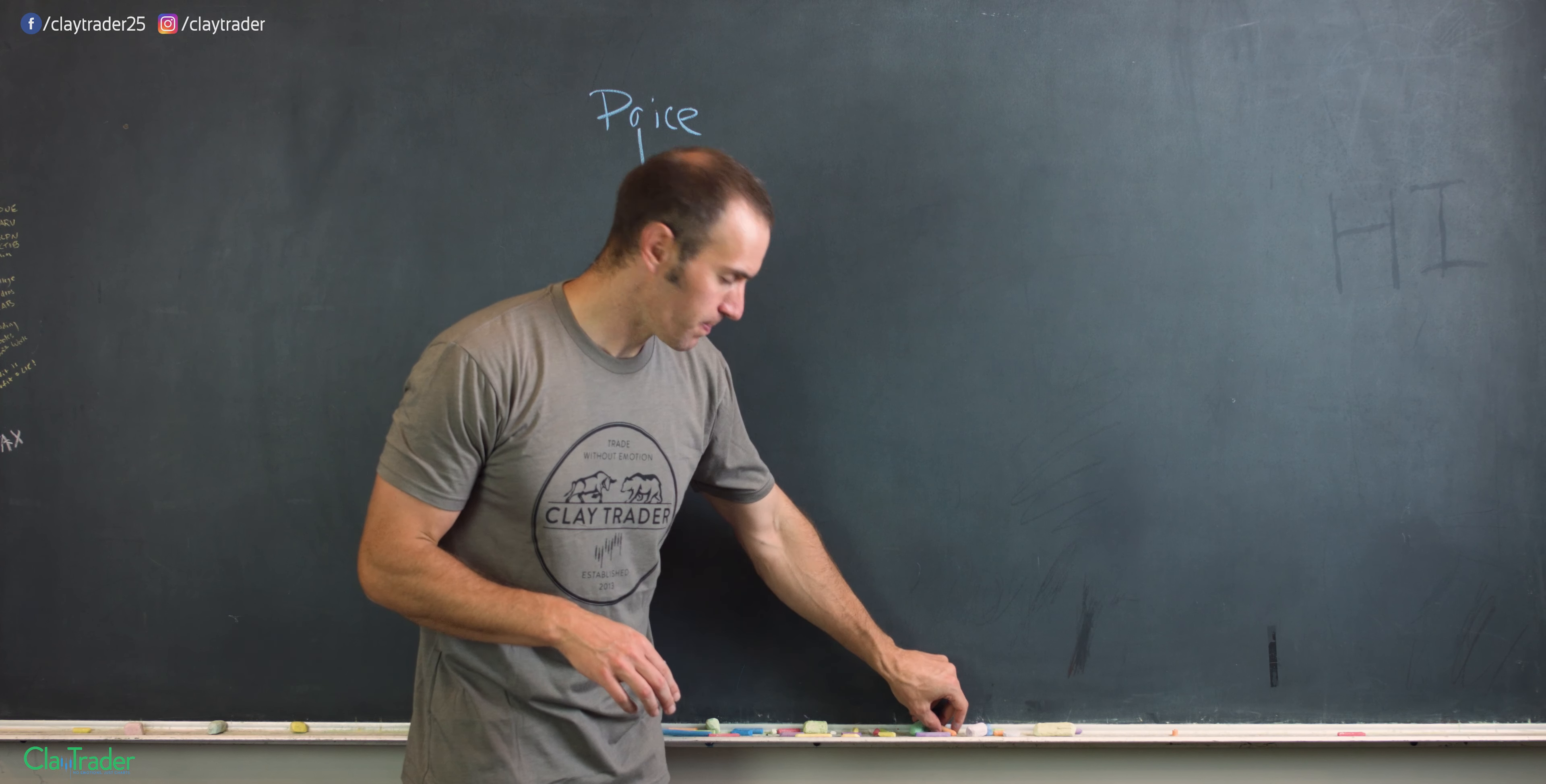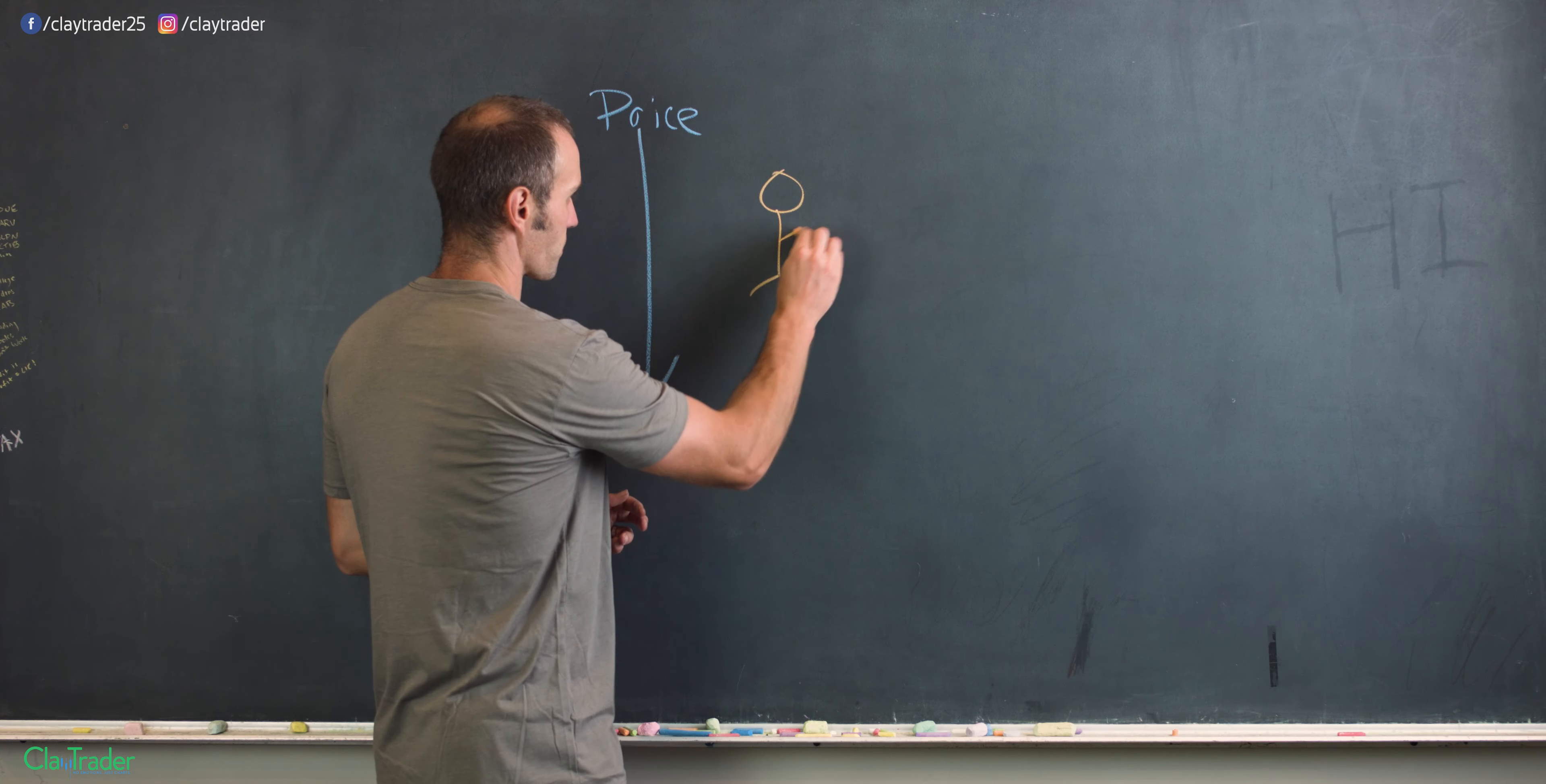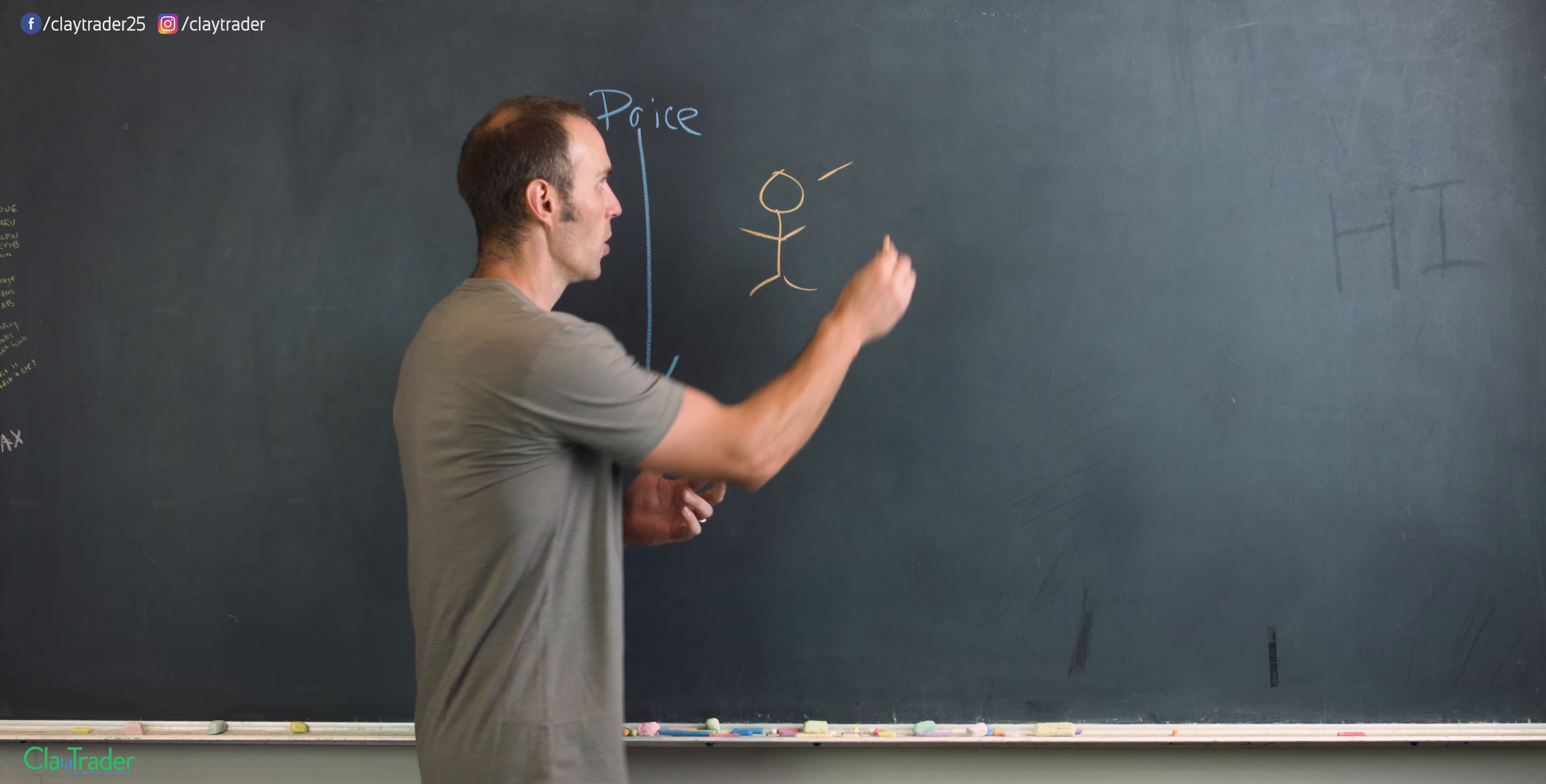How so? Well, let's look at it like this, and we'll use John as our example here. So we have John, and he's looking at a stock, and that stock is trading for, just to keep the math super easy, $100.